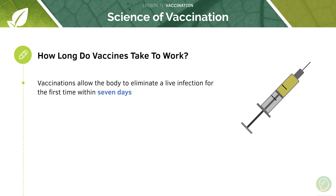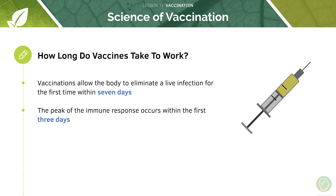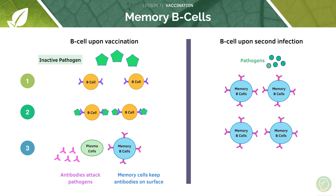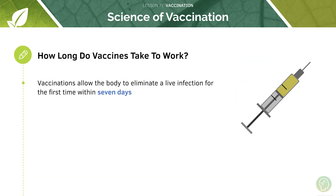Evidence shows that vaccination allows the body to eliminate a live infection within seven days, which is really quick, and the peak of the immune response occurs within the first three days. You need to work your way through the diagram of how vaccines work, draw it out and annotate it, and remember that there are different types of vaccine.